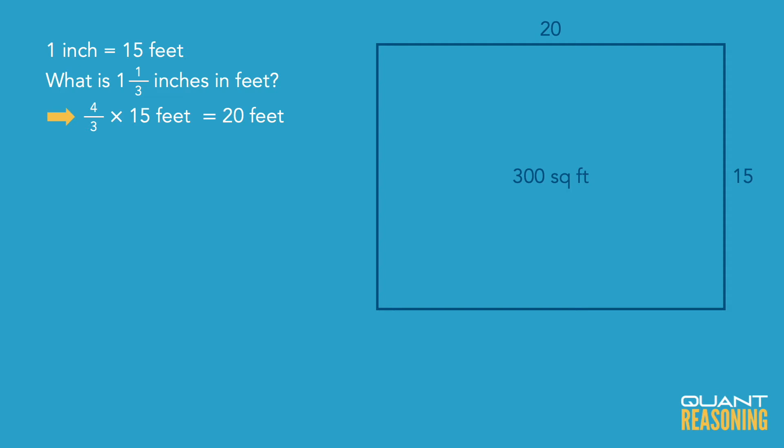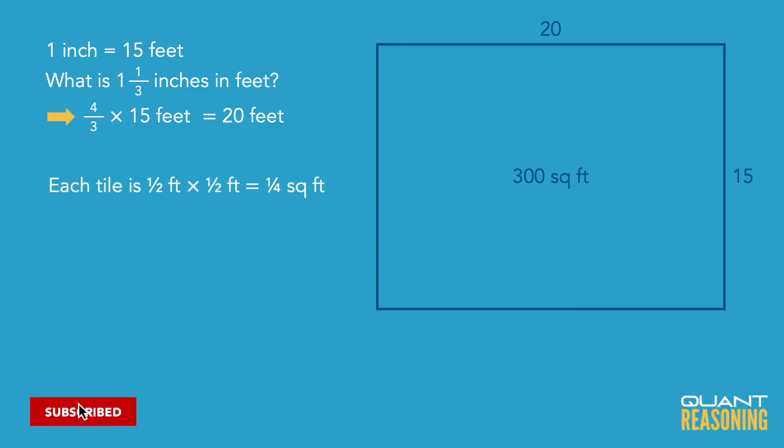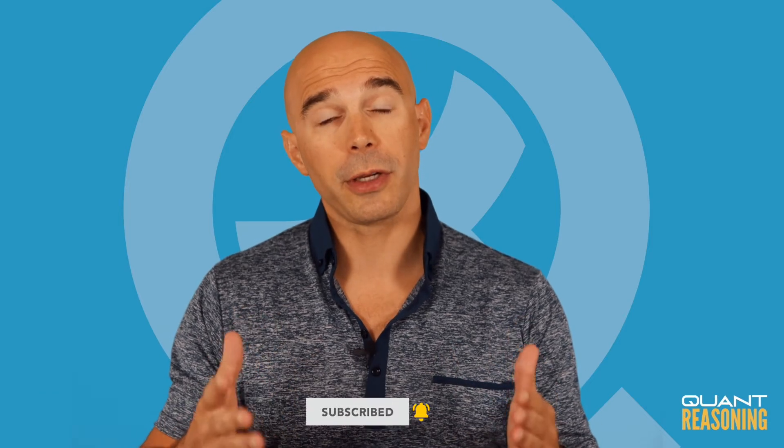The question wants to know how many tiles we would need in order to cover 300 square feet. Each tile is 6 inch by 6 inch, so in feet that would be half a foot by half a foot — multiplied together, that's 1/4 feet squared.